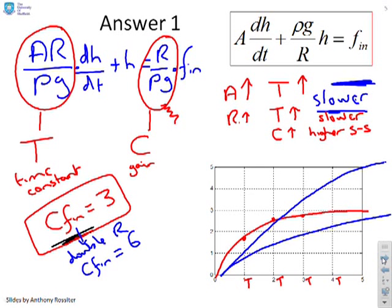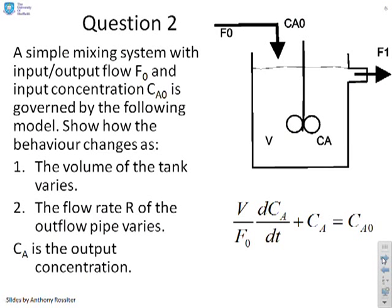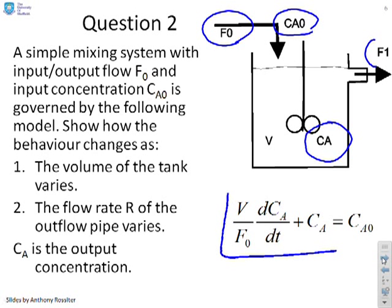Now for a mixing tank. With a mixing tank, there's a flow in with a particular concentration and a flow out assumed to have the same concentration as the liquid in the tank. A model for how the concentration in the tank varies as you change the flow rate or concentration of the input gives a standard first-order equation. The question is how does the concentration depend upon the volume of the tank and the flow rate in and out?